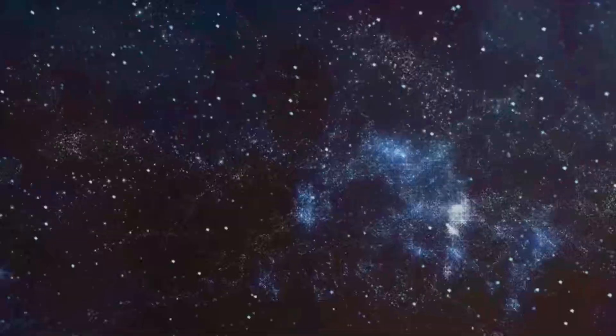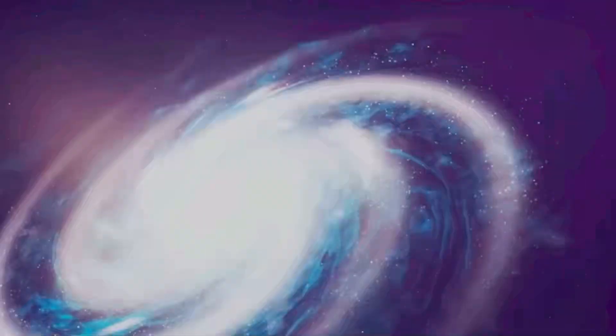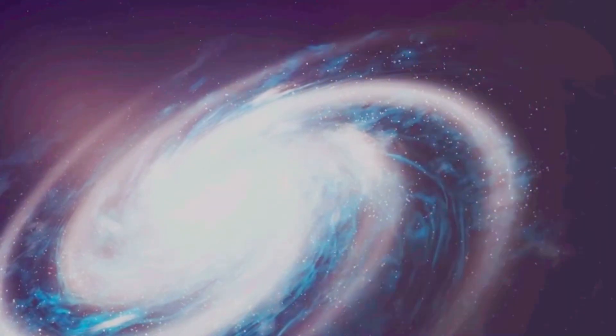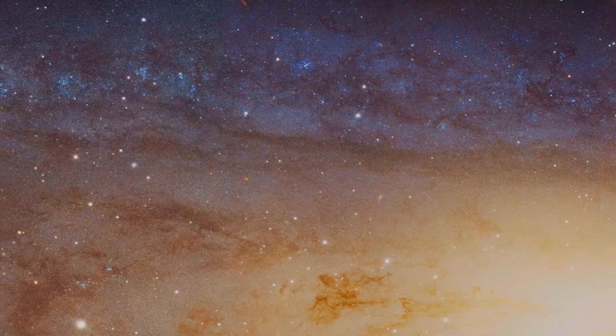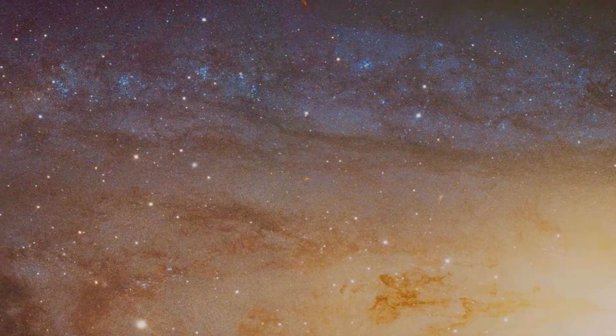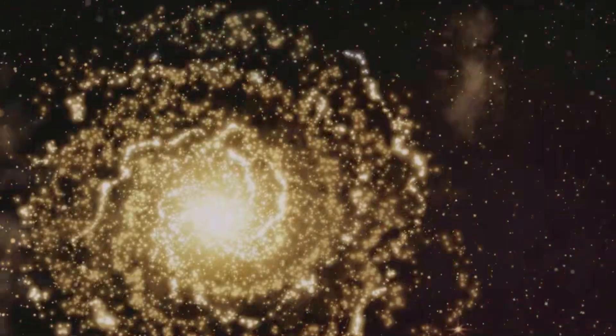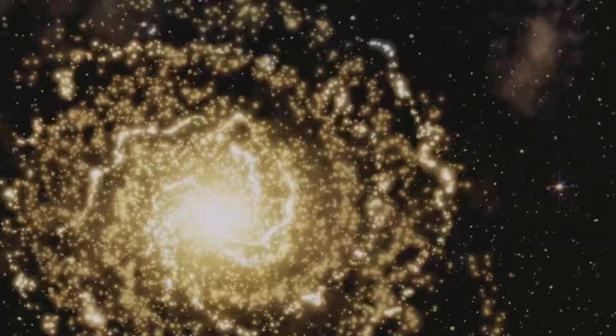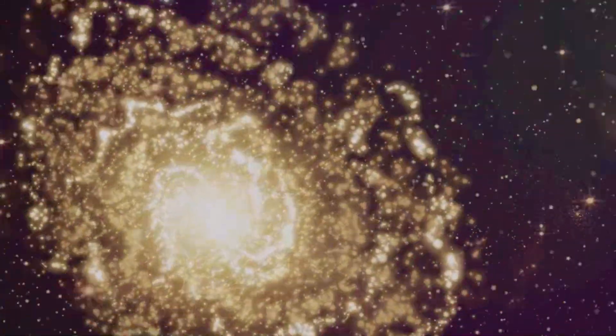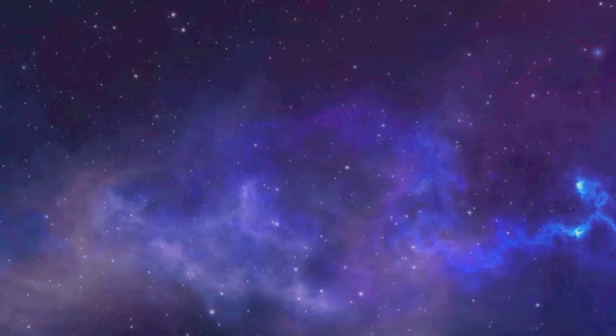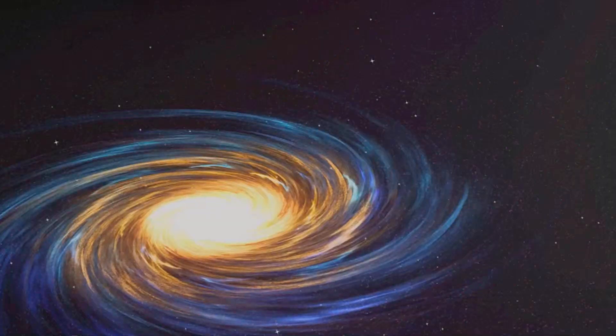Being pulled toward the Great Attractor doesn't mean doom for our galaxy. Instead, it's a slow, graceful merging process. First, the Milky Way and Andromeda will collide in about 4.5 billion years, forming a new galaxy, Milkomeda. Stars will mostly pass by each other, but gravity will reshape both galaxies. Over time, our new galaxy will continue its journey toward the Great Attractor, merging with others. This is cosmic evolution. Small structures combine to form larger ones. It's not destruction but transformation. The universe builds complexity through gravity's patient work.